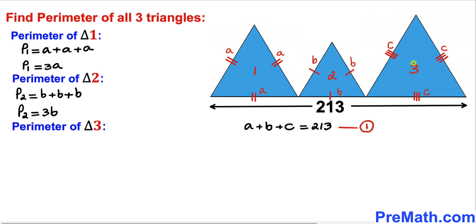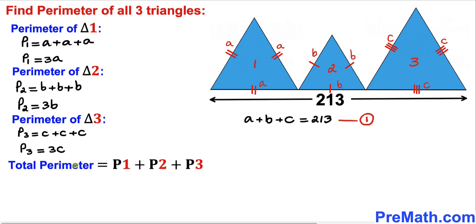Finally, the perimeter for triangle three is going to be P3, which is C plus C plus C, which is equal to 3C. Now we are going to calculate the total perimeter of all three triangles, and that's going to be the sum of the three individual perimeters P1, P2, and P3. So total perimeter P is going to be equal to 3A plus 3B plus 3C, and we can see 3 is in common.